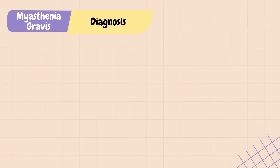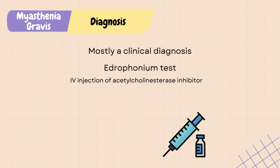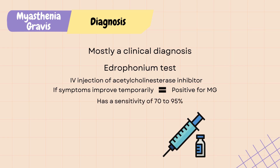Just like multiple sclerosis, MG is mostly a clinical diagnosis based on symptoms and physical examination. An edrophonium test injects a short-acting acetylcholinesterase inhibitor that increases the availability of acetylcholine at the neuromuscular junction so it can bind to acetylcholine receptors and cause muscle contraction. If the patient's symptoms improve temporarily, the test is positive, indicating MG. It has a sensitivity of 70–95% for MG diagnosis.